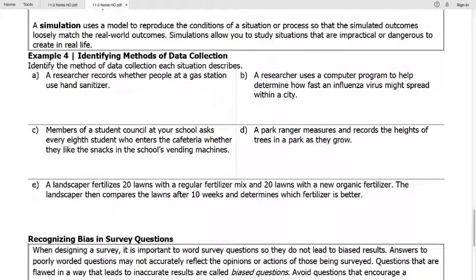All right. Example four. Second to last example here. We want to know what method of data collection is being used in each situation. So example A. A researcher records whether people at a gas station use hand sanitizer. The researcher is only observing. We're not doing anything else. So this is observational.